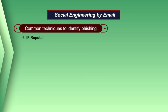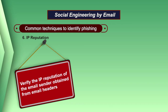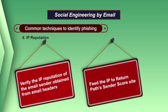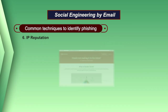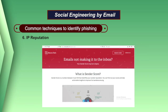Another technique to identify a phishing attack is to check IP reputation. Verify the IP reputation of the email sender obtained from email headers and feed the IP to the return path's sender score site. This tool produces a score on a scale of 0 to 100, giving insight into the sending IP's historical performance. The lower the score, the more likely the email is a phishing or spoofing attempt.